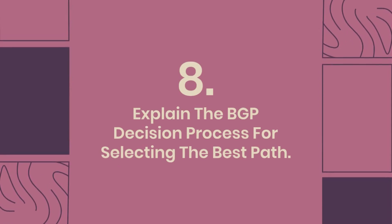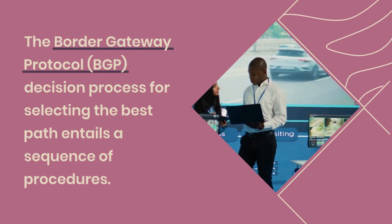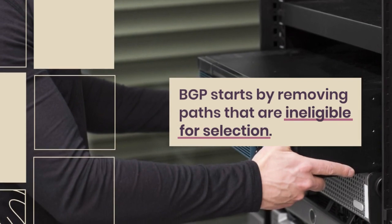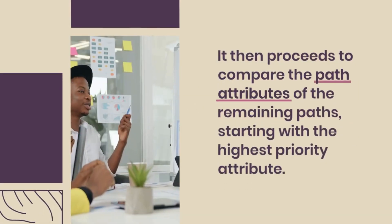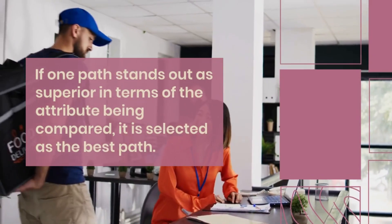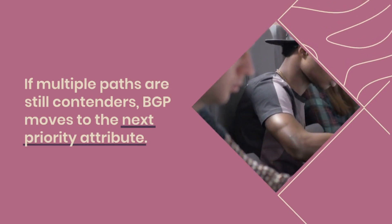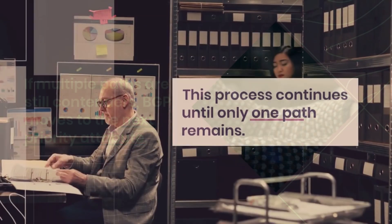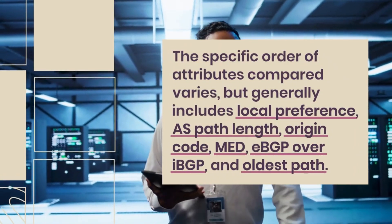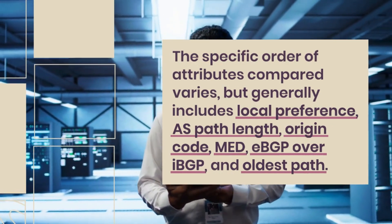Explain the BGP decision process for selecting the best path. BGP starts by removing ineligible paths, then compares path attributes of remaining paths starting with the highest priority attribute. If one path stands out, it is selected as the best path. If multiple paths remain, BGP moves to the next priority attribute, continuing until one path remains. The general order of attributes compared includes local preference, AS path length, origin code, MED, EBGP over IBGP, and oldest path.